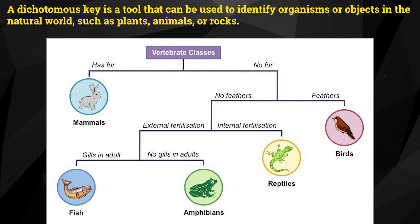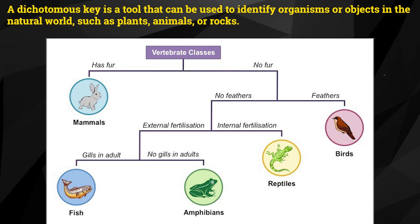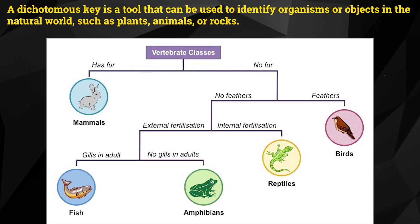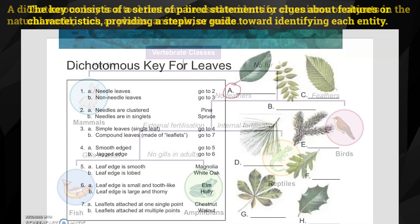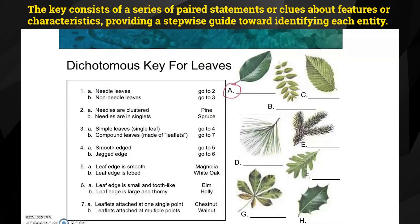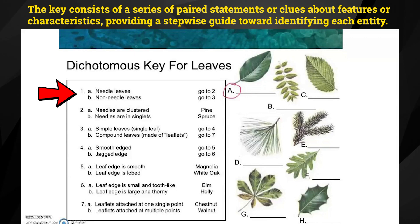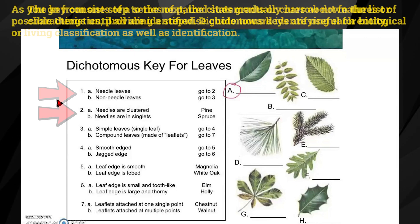A dichotomous key is a tool that can be used to identify organisms or objects in the natural world, such as plants, animals, or rocks. The key consists of a series of paired statements or clues about features or characteristics, providing a stepwise guide towards identifying each entity.